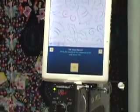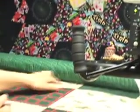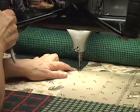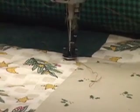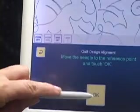And it says move the needle to the reference point. So I'm looking on my quilt now and I'm counting one, two, three bells, it's this one here. Okay, I've moved the needle to the reference point so I'm hitting okay. Okay, now IQ knows where the quilt is and everything.